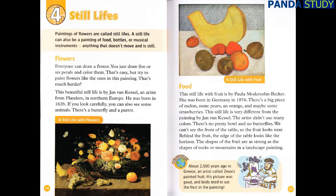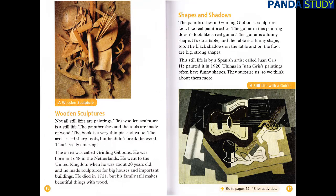Discover. About 2,500 years ago in Greece, an artist called Zeuxis painted fruit. His picture was so good that birds tried to eat the fruit in the painting. Wooden Sculptures. Not all still-lifes are paintings. This wooden sculpture is a still-life. The paintbrushes and the tools are made of wood. The book is a very thin piece of wood. The artist used sharp tools, but he didn't break the wood. That's really amazing!